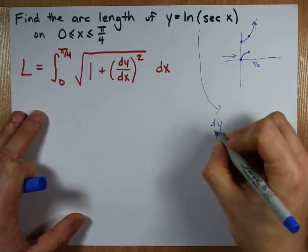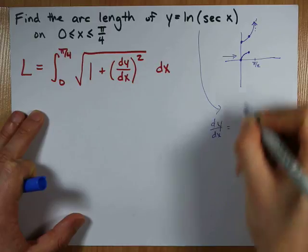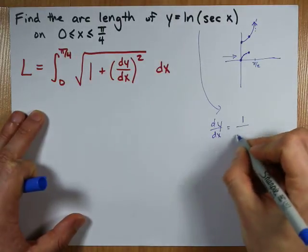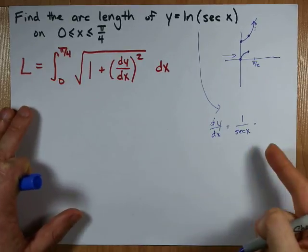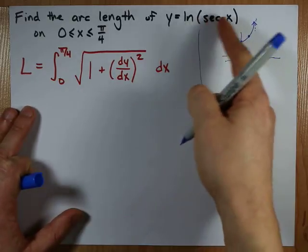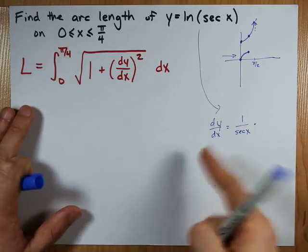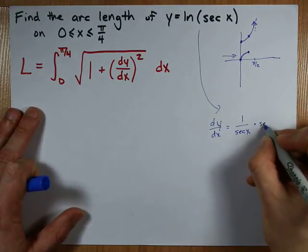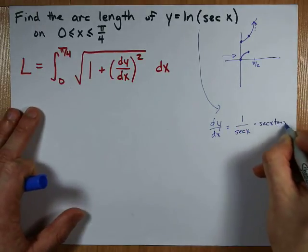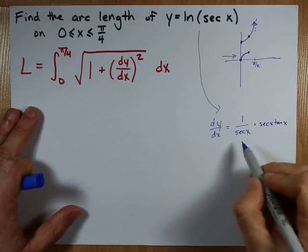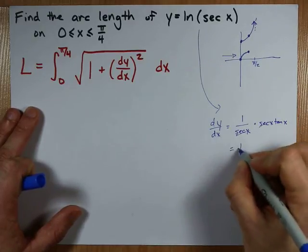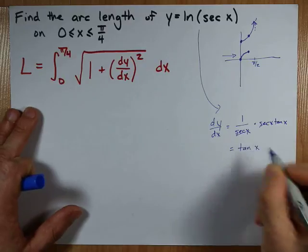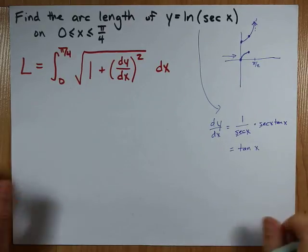Because you'll know that the derivative of a ln of anything is 1 over that same anything times the derivative of that inside. The derivative of secant is sec x tan x. And when you multiply these two through chain rule, the sec x's cancel. You end up with a derivative of just tan x.